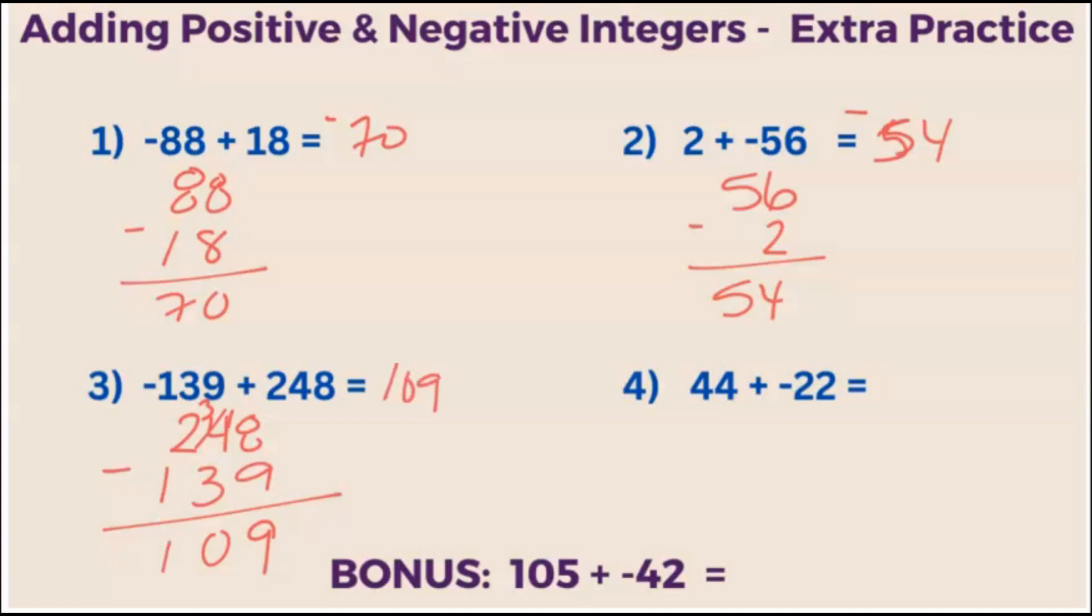The absolute value of 248 is greater than the absolute value of negative 139. So this one is positive. So the answer is positive. Negative 139 plus positive 248 is equal to positive 109.